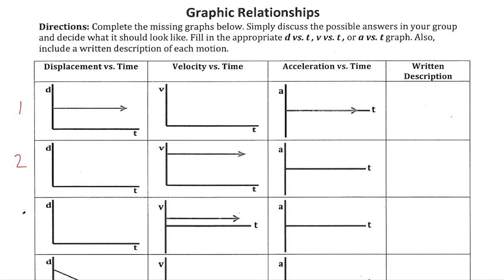Let's number these problems so we can talk about them as problem one, two, three, four, and so on. Looking at this first displacement-time graph - think about what displacement means. It's just the distance from our start to our finish, like our distance from home after a road trip. It's path independent, so displacement literally means how far out of place I am from where I originally was.